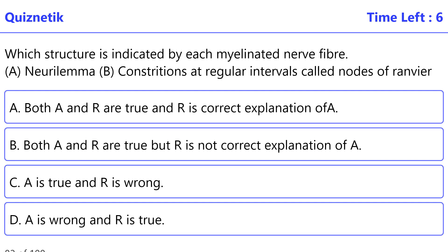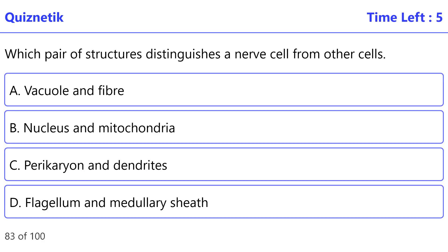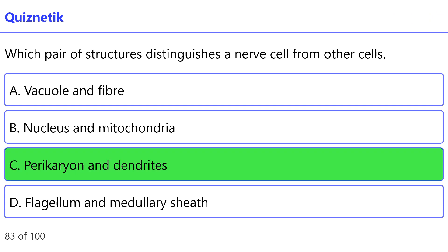In the following questions there are two statements, assertion and reason. Correct option is B: both A and R are true but R is not the correct explanation of A. Which pair of structures distinguishes a nerve cell from other cells? Correct option is C: perikaryon and dendrites.